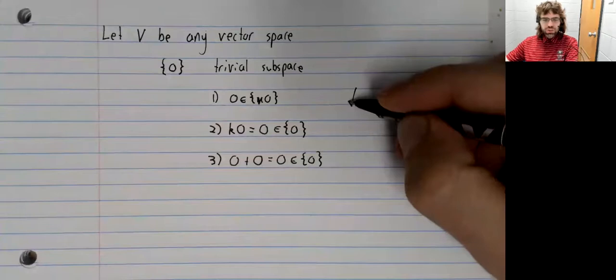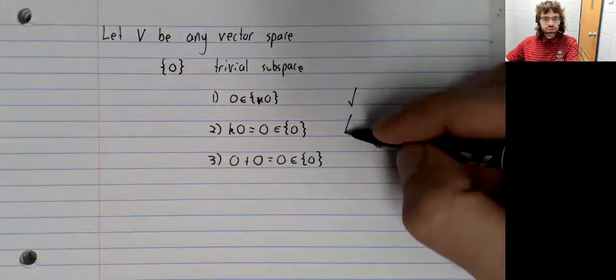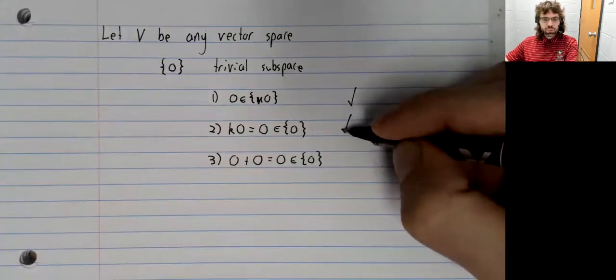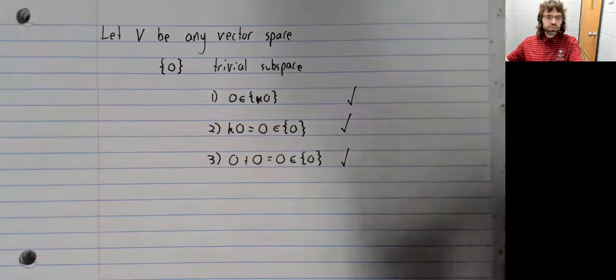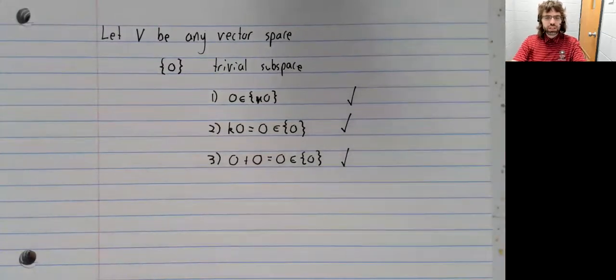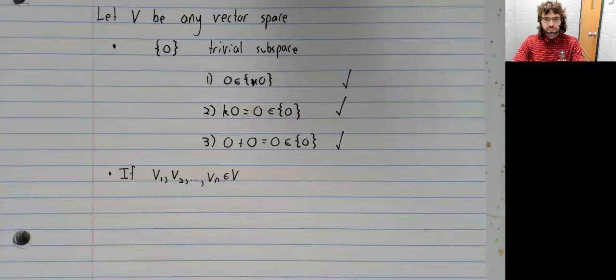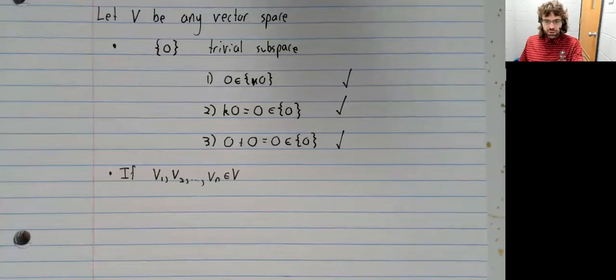Includes zero, closed under scalar multiplication, closed under addition. We can add vectors, subtract vectors, and multiply vectors by scalars.